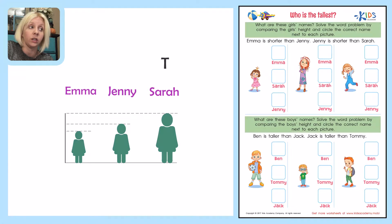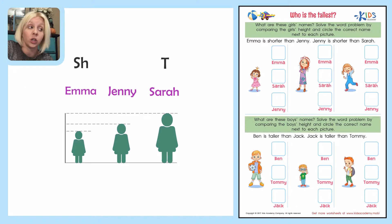I'm going to write T for tallest and SH for shortest. We know that Emma is going to be the shortest and Jenny is going to be the one in the middle.